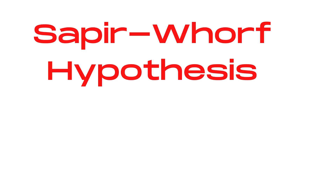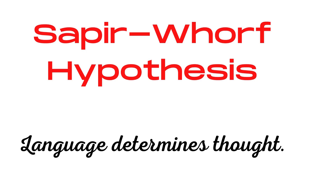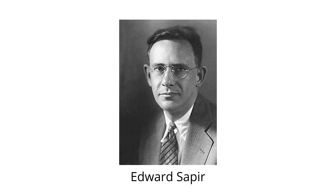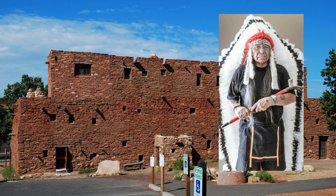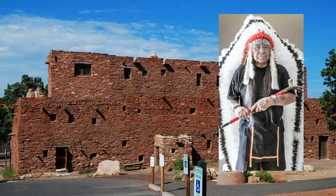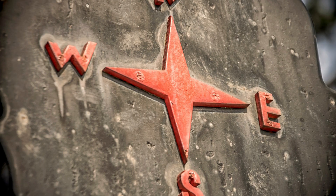The so-called Sapir-Whorf hypothesis states that language determines thought. It is labeled 'so-called' because it seems that neither Edward Sapir nor Benjamin Whorf actually stated this. However, they point to Native American languages whose words for time are different from those of Europeans, leading to a different perception of time. Another minority speech community has vocabulary involving absolute directions instead of right and left.